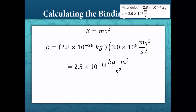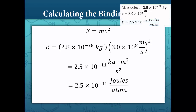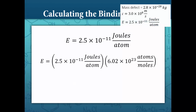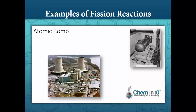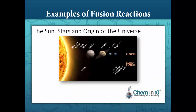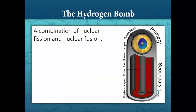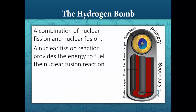That is for one atom of uranium. For a mole of uranium, the binding energy is 6.02 times 10 to the 23 times as much, or 1.5 times 10 to the 13 joules. Most, if not all, the nuclear reactors that we have been successful in manufacturing are fission reactions, such as the atomic bomb and the reactions inside nuclear reactors. Examples of fusion reactions that occur naturally are the reactions on the sun, stars, and of course the creation of our very first atoms when the universe began. The hydrogen bomb employs a combination of nuclear fission and nuclear fusion — it uses an initial nuclear fission reaction to provide the energy to fuel the nuclear fusion reaction.